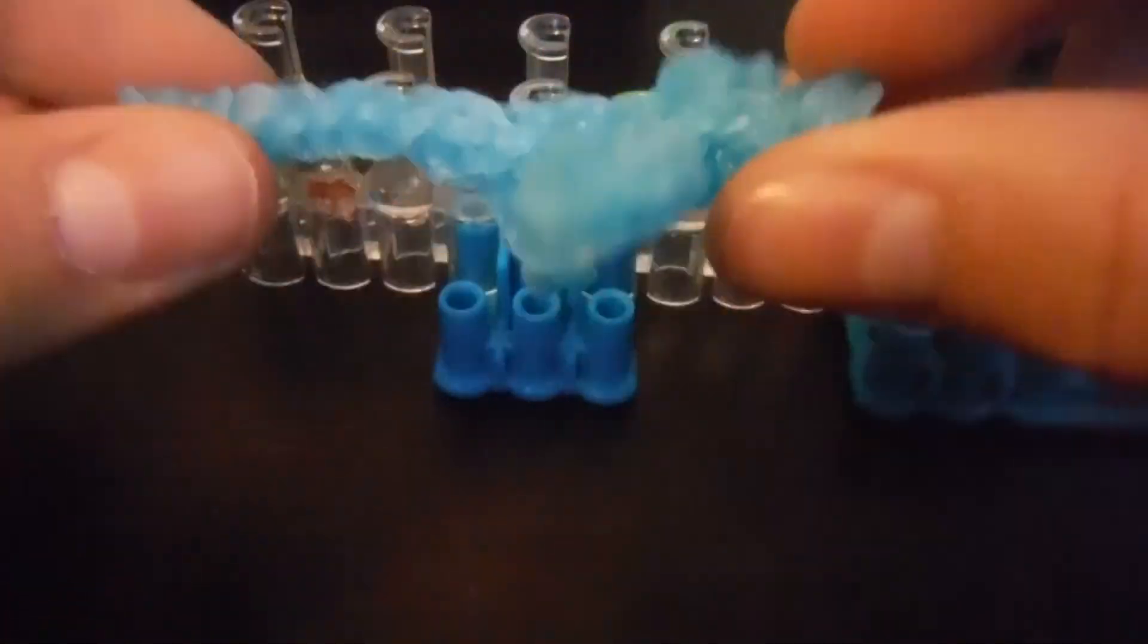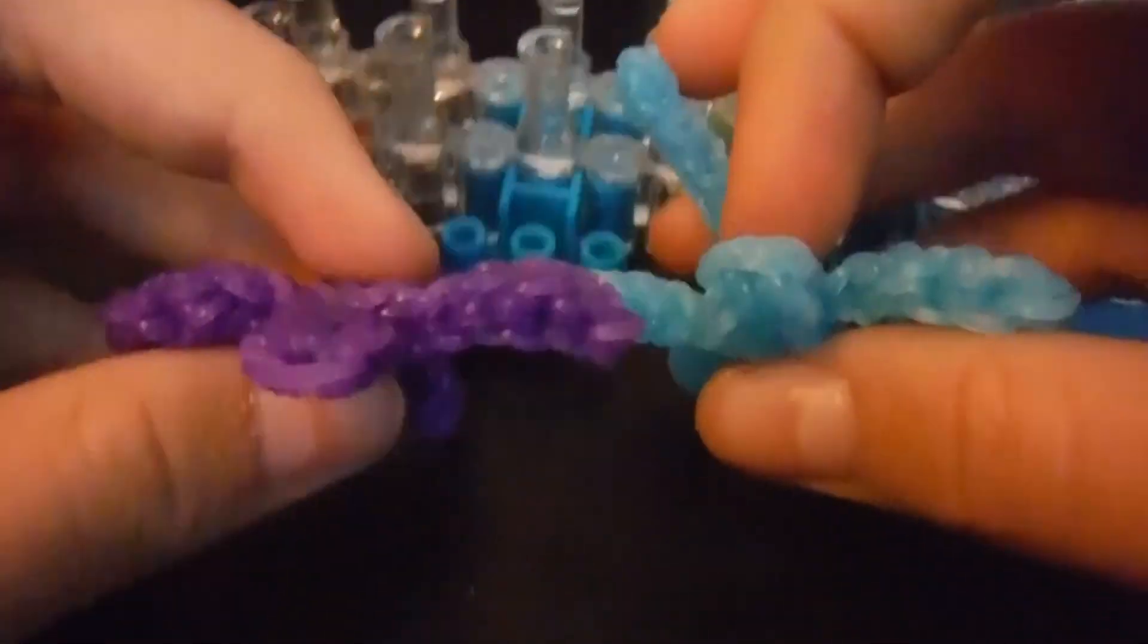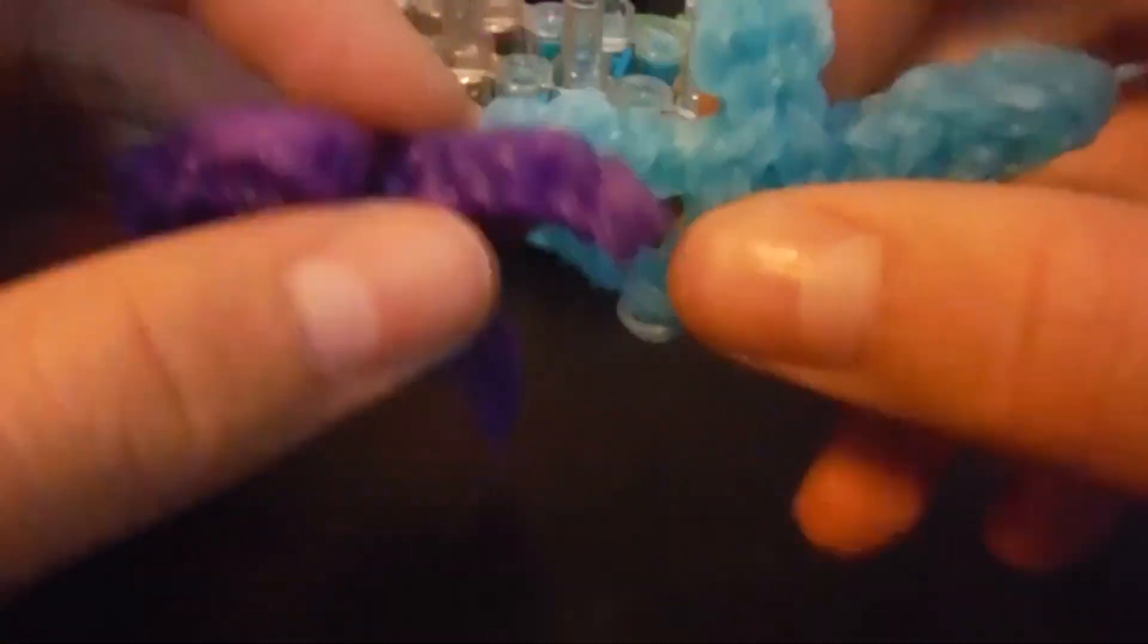Like so. And then you can take off this final tying off band. And then, there's your baby Skrill. He's so adorable. I hope you enjoyed, and I will see you in the next tutorial. Bye!